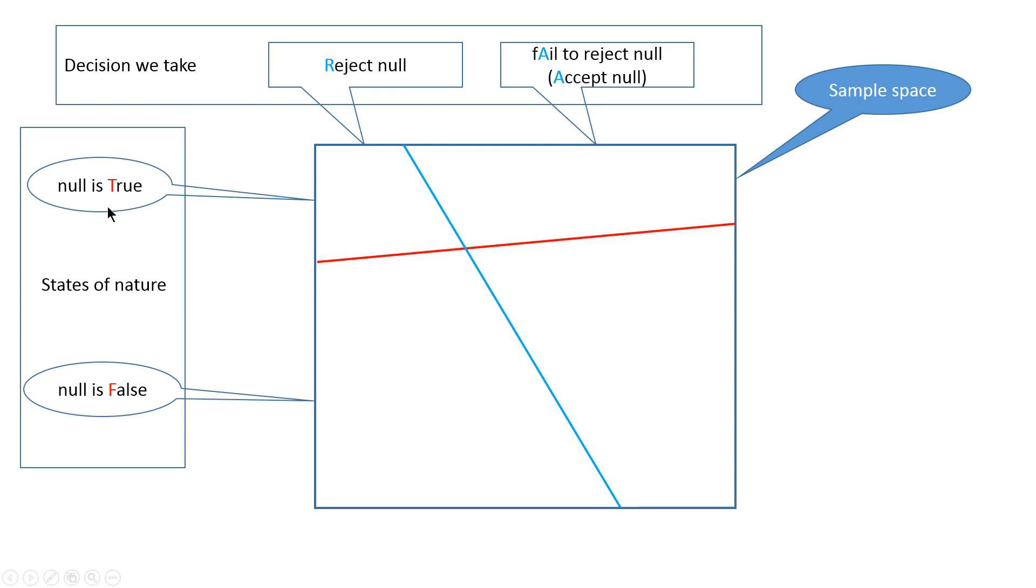I want to emphasize the notation. When you use some notation, don't use abstract X, Y, Z. Try to use something that reminds you what you are dealing with. Here the null is true and we put T for true. Here we put F for false. Here we put R for reject, and here either part of the word fail A, or alternatively accept the null. The region for accepting the null will be everything to the right of this blue line.